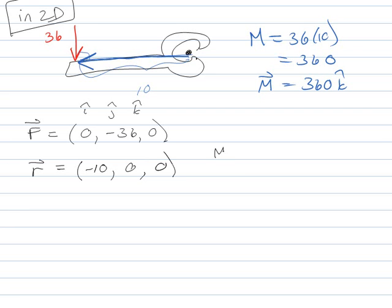So negative 36 in the j direction. Then I can say, the r in this case would be pointing negative 10 in the i direction, 0 and 0. So if I wanted to find the moment with r1, I could cross i, j and k. So negative 10, 0, 0, 0, negative 36, 0. So i times 0 minus 36. And again, this is assuming you already know how to do this, because we already explained it once, so you should know it forever, right? Go back and review the videos.